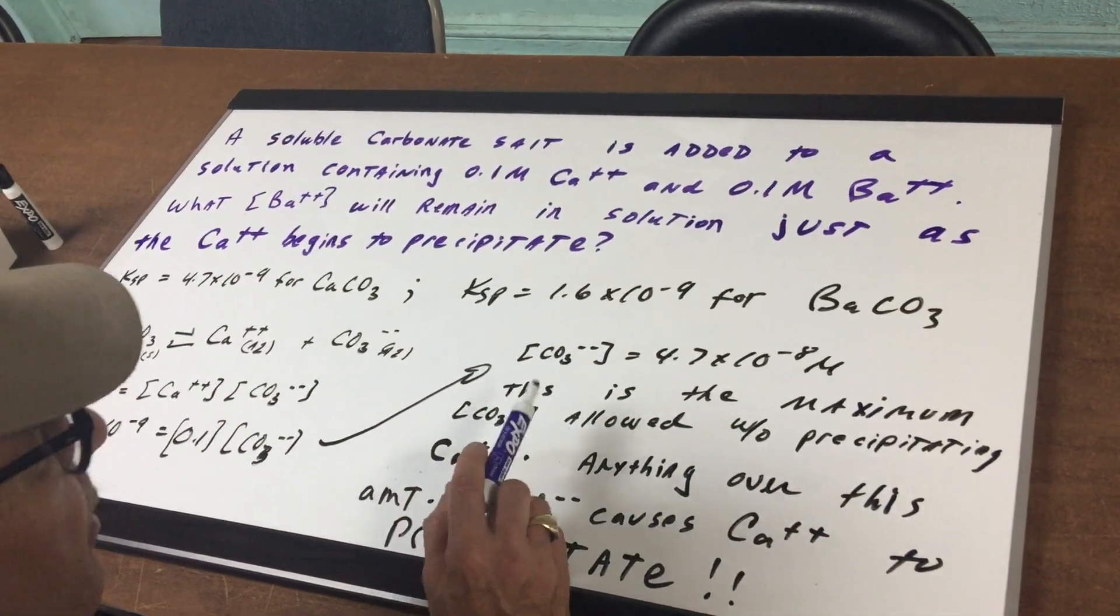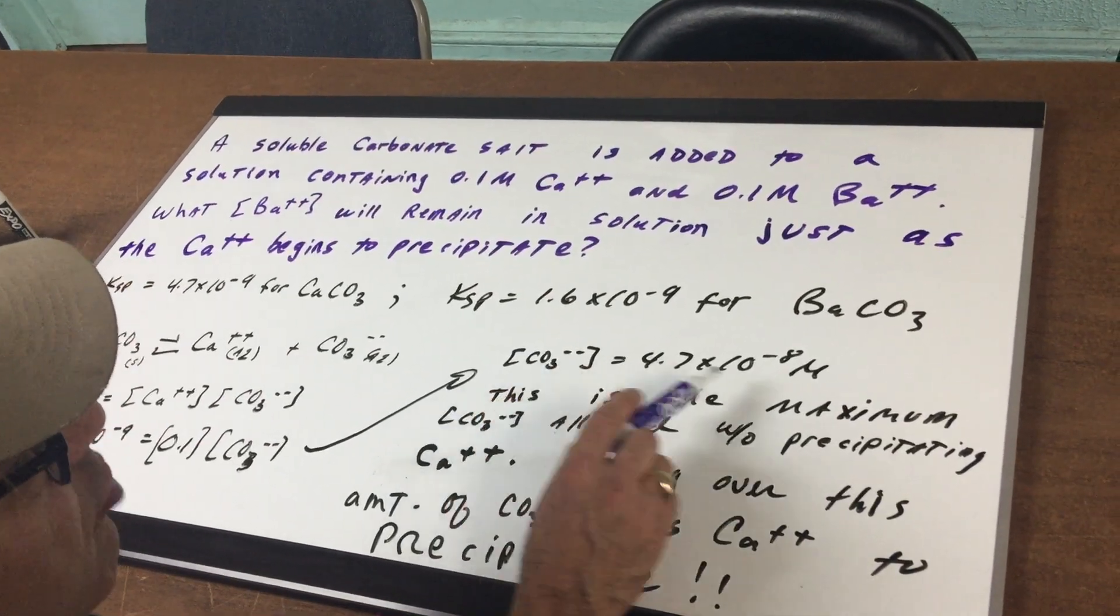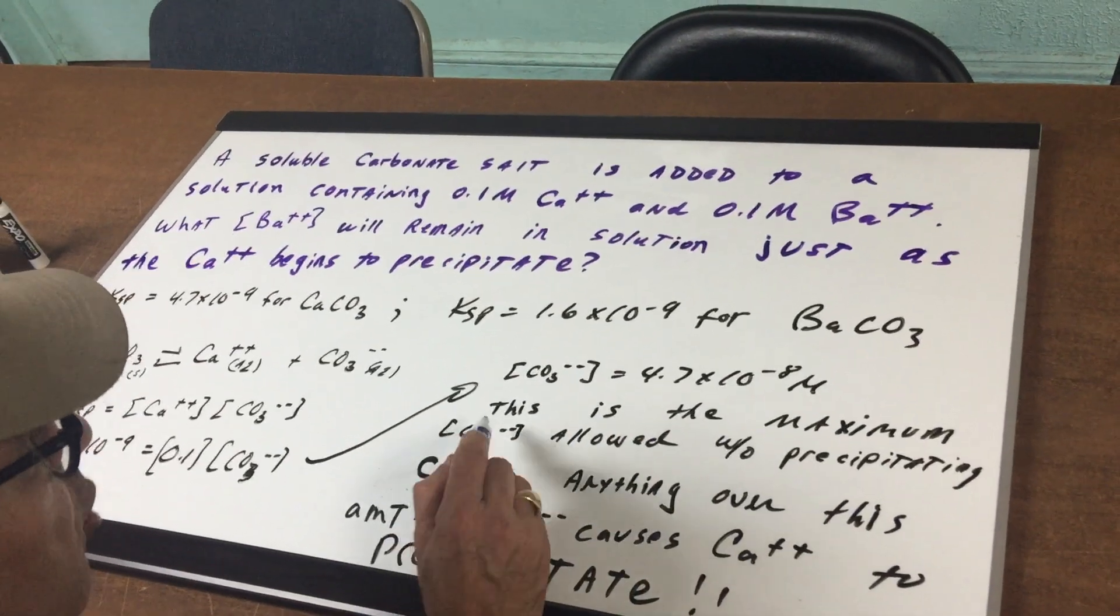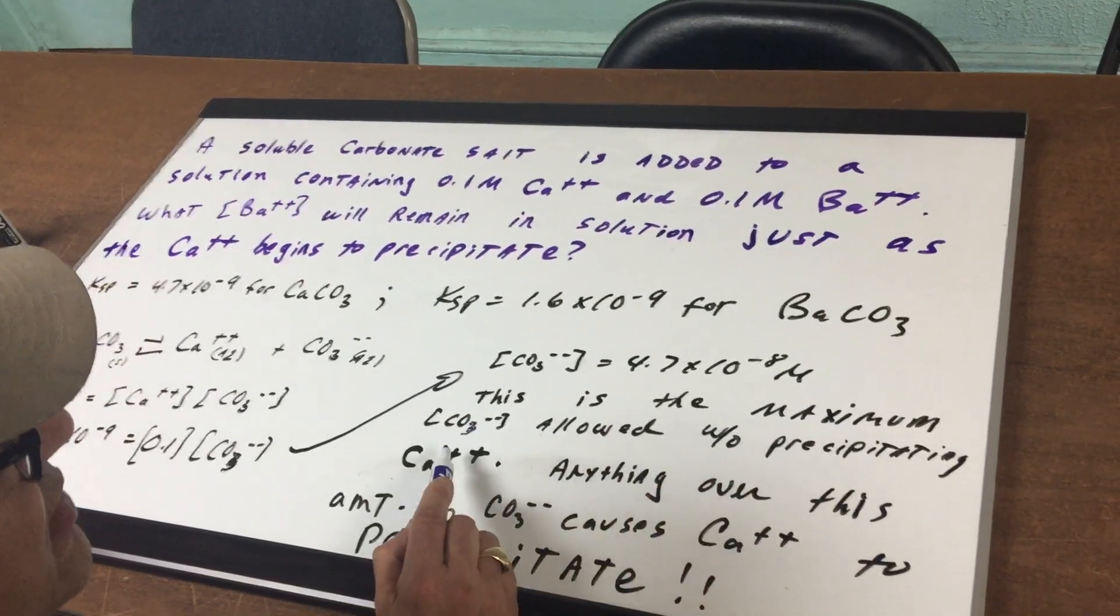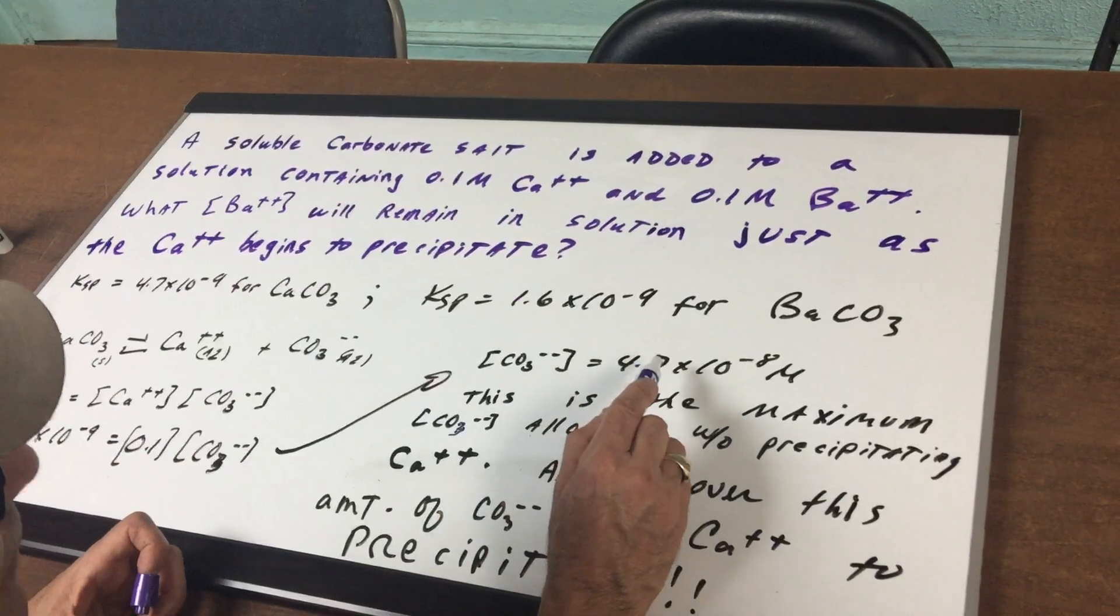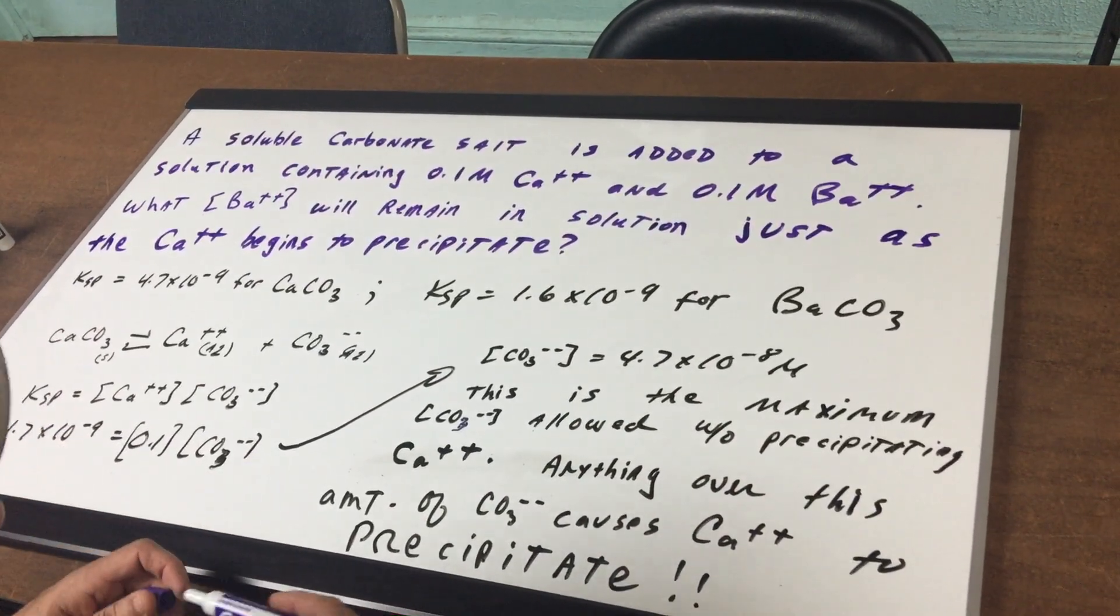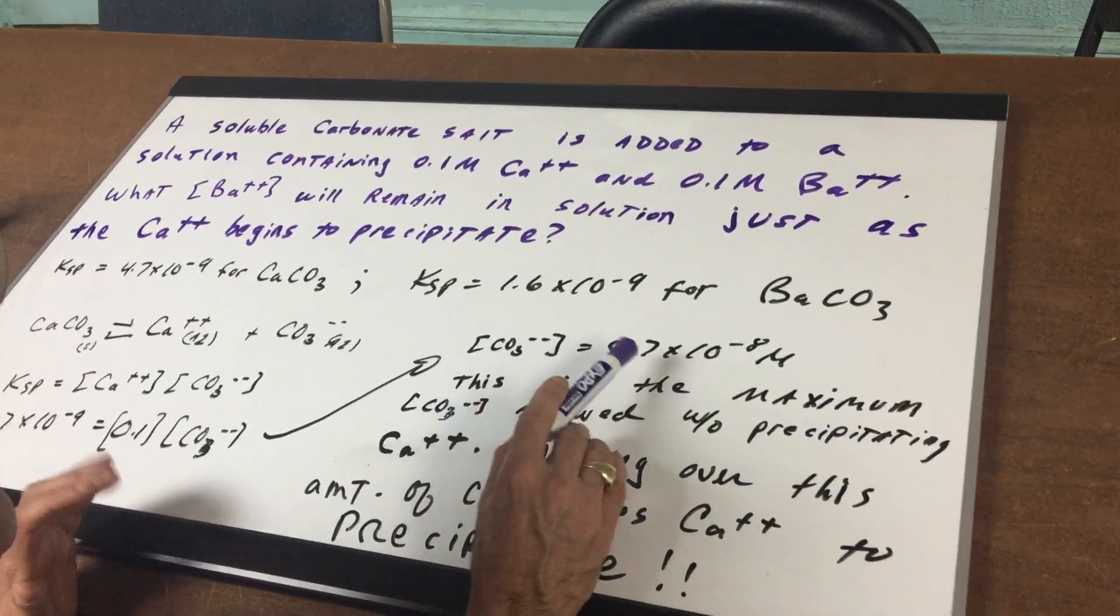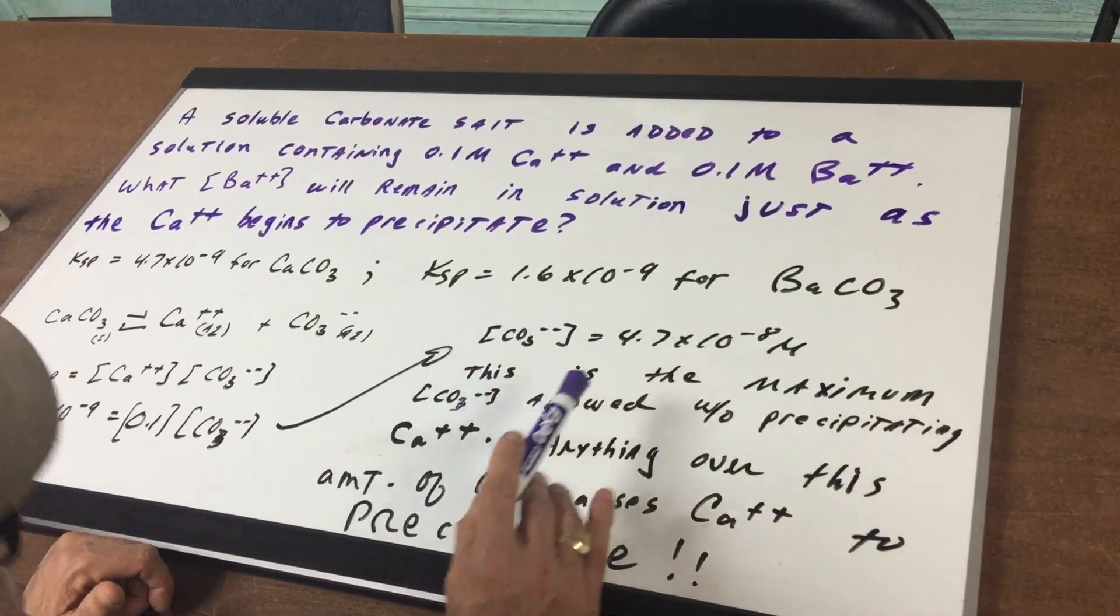Now what does this mean? This is the amount of carbonate that gives me a saturated solution. In other words, this is the maximum carbonate concentration allowed without precipitating any calcium. So if you go beyond this number, anything over this amount would cause the calcium ions to precipitate. So we now found the amount of carbonate that's going to get us just to the point before it precipitates.